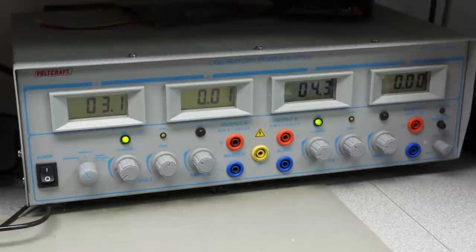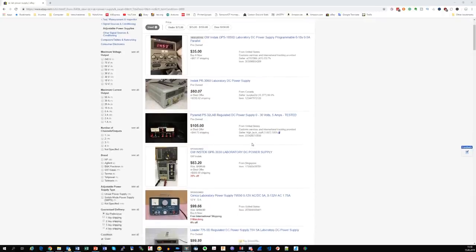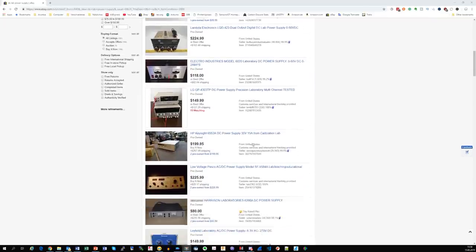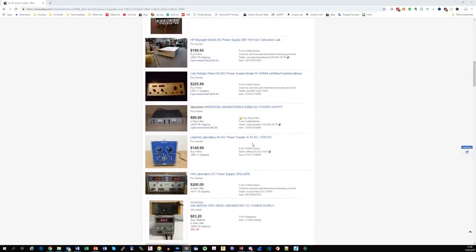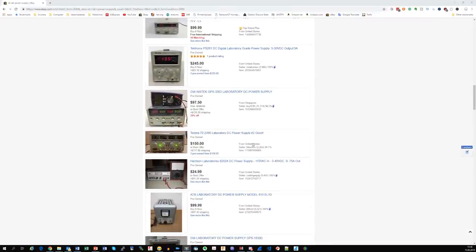A general rule here: I bought this bench power supply second hand on eBay. This is an excellent choice for equipment which does not develop fast like power supplies. It makes less sense for example for oscilloscopes, where the prices drastically came down over the last few years.